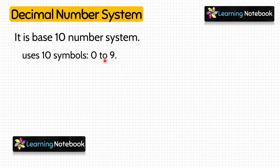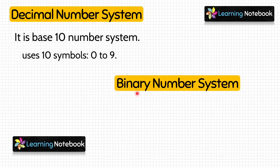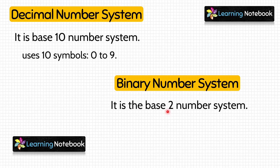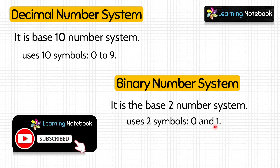Next is the binary number system. 'Bi' means 2, so it is the base 2 number system. This means this system uses two symbols, 0 and 1, to represent any number.